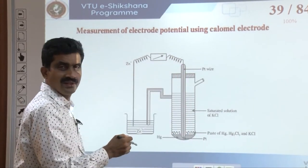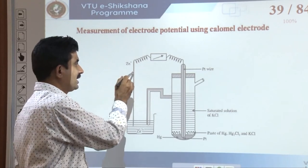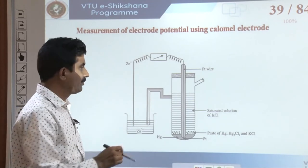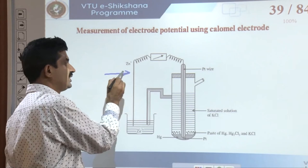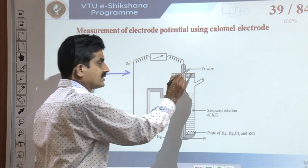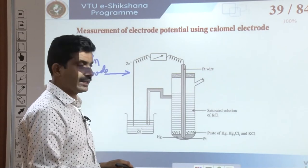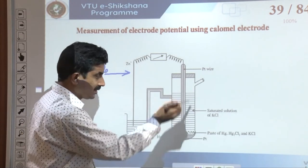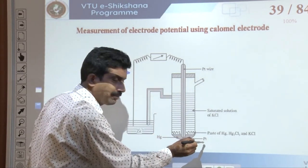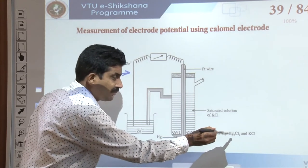This is how the electrode potential of zinc is determined making use of the calomel electrode. The arrangement shows a zinc rod as the test electrode dipped in zinc sulfate, connected to the saturated calomel electrode. Mercury is at the bottom of the calomel tube, covered by a paste of mercury, mercurous chloride, and KCl. Saturated KCl solution is introduced from the side opening, which fills the side tube acting as the salt bridge.